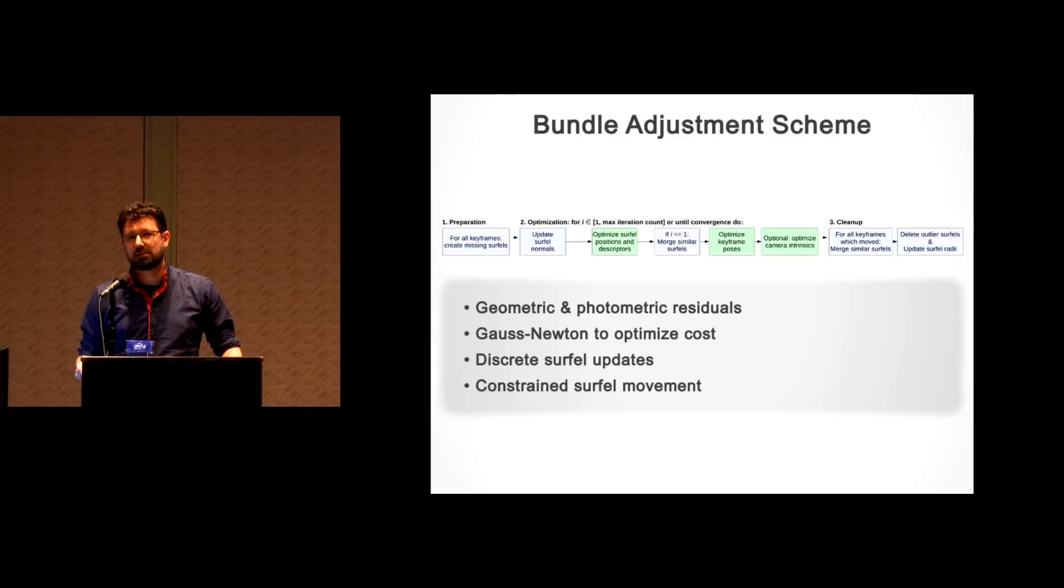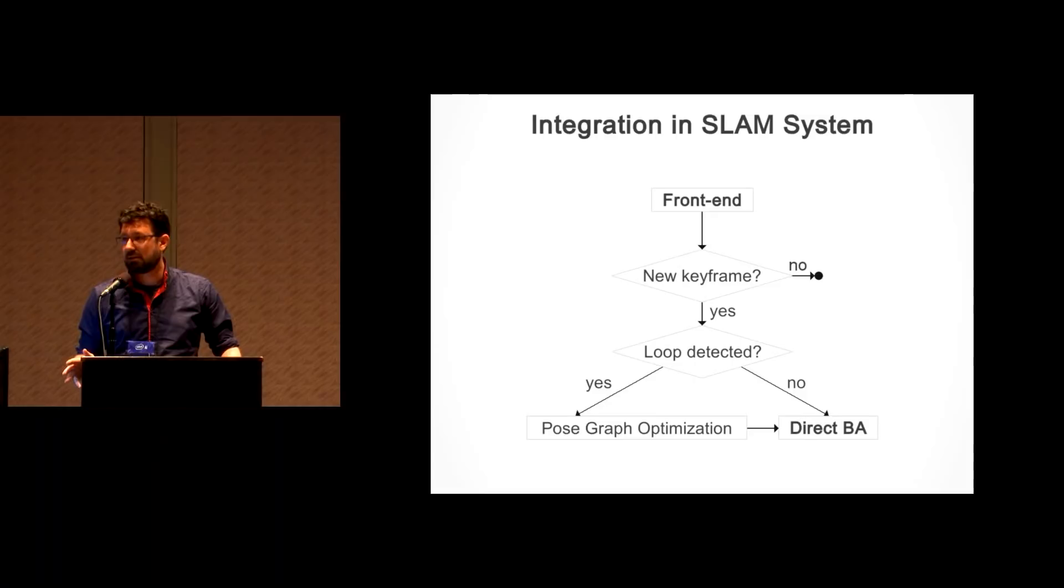Our bundle adjustment scheme contains photometric and geometric residuals which you optimize using Gauss-Newton. But there are also discrete surfel update steps such as creating new surfels, merging surfels. The movement of the surfels is actually constrained along the surface normal which we also optimize as part of the bundle adjustment. The adjustment is integrated into a standard Slam system where there is a front end that tracks the camera pose in real-time, and a back end that performs bundle adjustment as soon as a new keyframe is created, potentially after pose graph optimization.